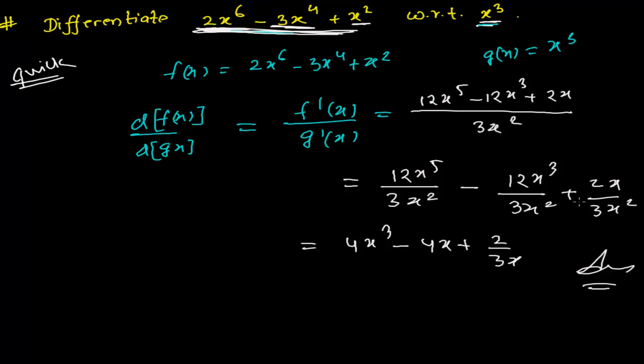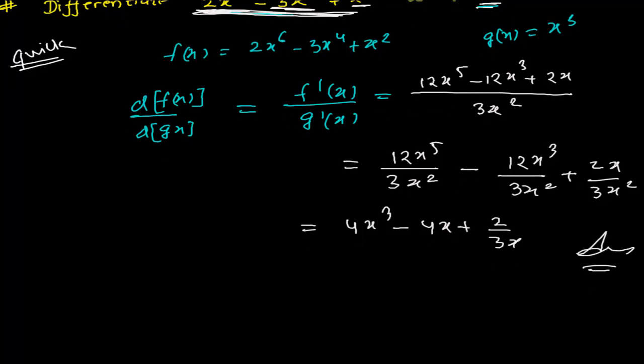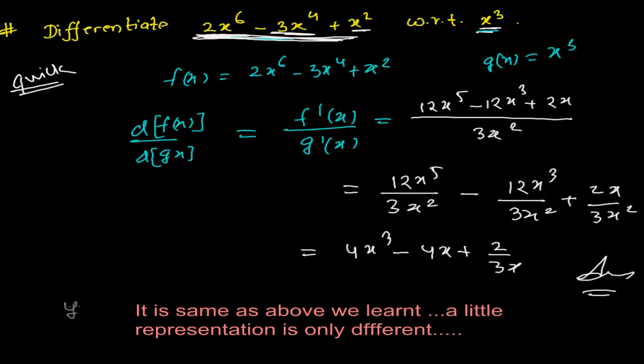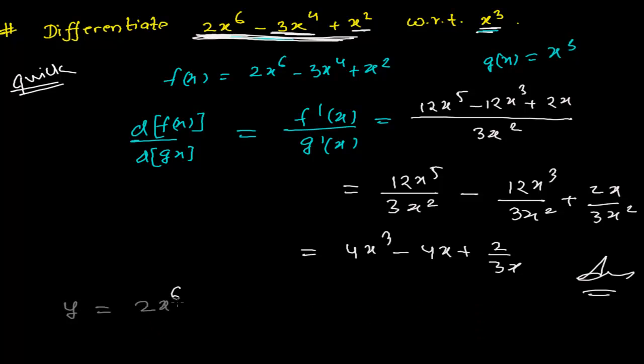That's it. But this is the quickest method. If you don't have time and quickly you have to do it, then do it this way. But another one I want to tell you, fully process-wise, if you have to do it, then as we did initially. Let's imagine a function y = 2x^6 - 3x^4 + x^2, and imagine another function z = x^3.